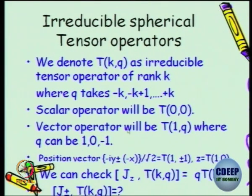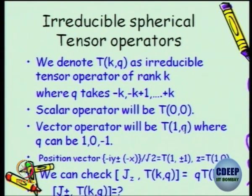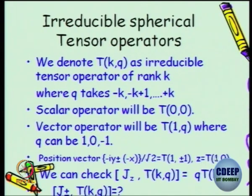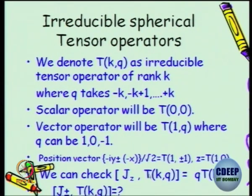A vector operator will be called a rank-1 operator, and q will take values minus 1, 0, and plus 1. Now you will ask: suppose you take the position vector — you know the components are x, y and z — but to make contact with this formal notation it is better to write them as complex coordinates. The z-component is T(1,0), and T(1, plus or minus 1) we will take to be this combination, and we will see why this is true and why we are doing this.